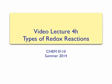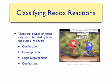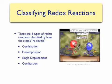Video Lecture 4H: Types of Redox Reactions. In the previous lecture we discussed redox reactions — those reactions that involve the transfer of electrons between two species. In this lecture we will look at different types of redox reactions, classifying them by how the atoms reshuffle or rearrange themselves between reactants and products.